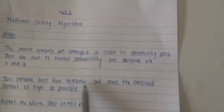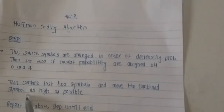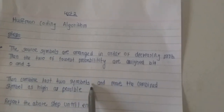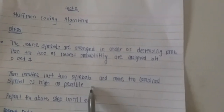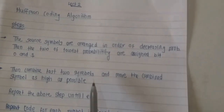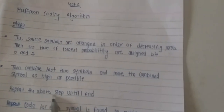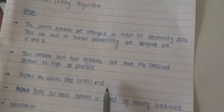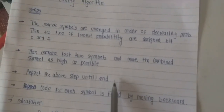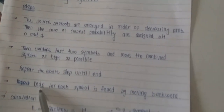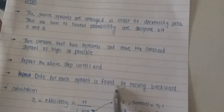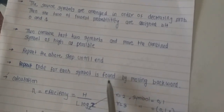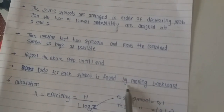Then combine the last two symbols and move the combined symbol as high as possible, meaning arrange all probabilities again in descending order. Repeat all these steps until a single probability remains. The code for each symbol is found by moving backward.